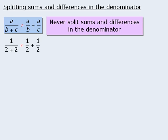When we evaluate the left-hand side, we get 1 quarter, and when we evaluate the right-hand side, we get 1. So clearly this rule does not work. So it's okay to split the numerator, but it is not okay to split the denominator.